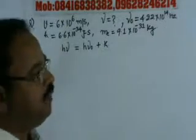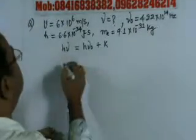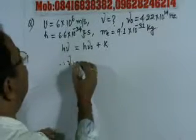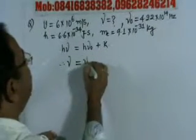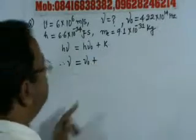Therefore ν will be equal to ν₀ plus kinetic energy divided by h, which is ½mv² divided by h.